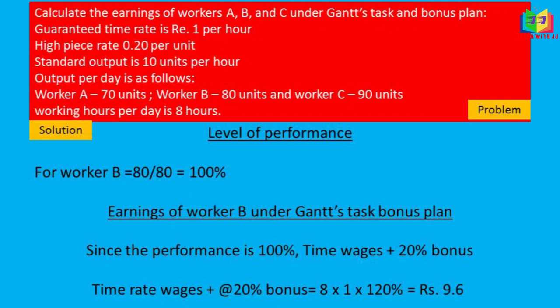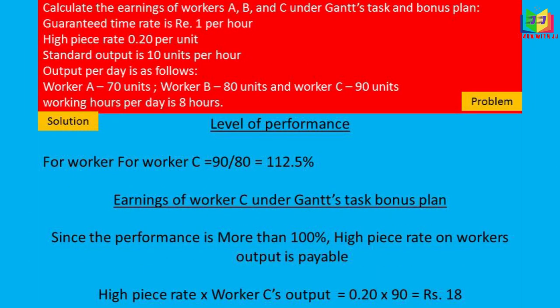For Worker B: time wages plus 20% bonus = 8 × ₹1 × 120% = ₹9.60. For Worker C: high piece rate wages = 90 units × 20 paise per unit = ₹18. These are the earnings of workers A, B, and C under Gantt's Task and Bonus Plan.